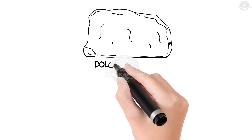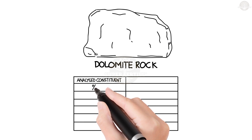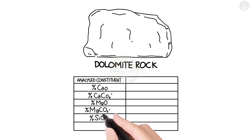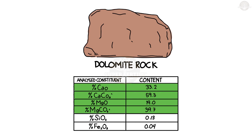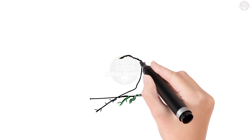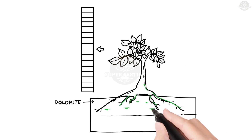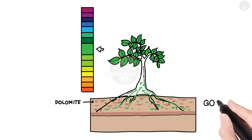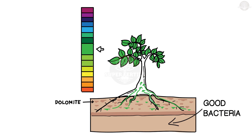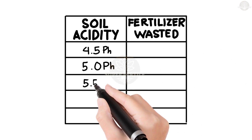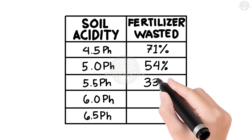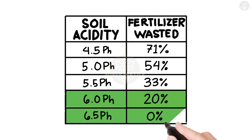Dolomite is a naturally occurring limestone rock comprised mainly of magnesium and calcium. Dolomite helps raise the soil's pH so the good bacteria can do their job. This means less fertilizer is wasted because the soil is releasing more nutrients to the plants.